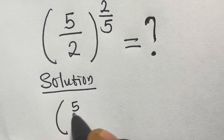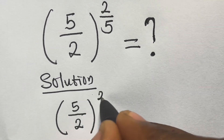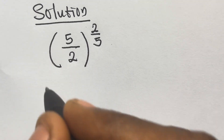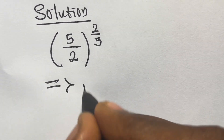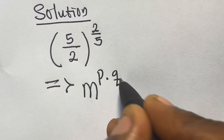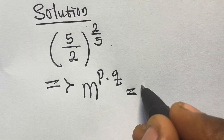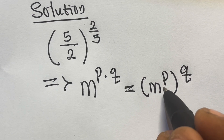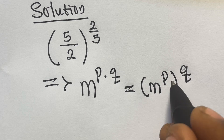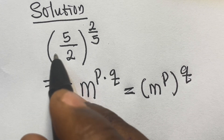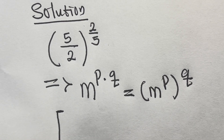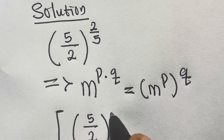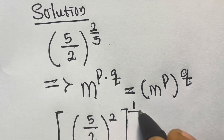We have 5 divided by 2 raised to the power 2 divided by 5. Let's recall that if you have m raised to the power p times q, this is equal to m raised to the power p, raised to the power q. This is the product power law — when a number raised to a certain power is again raised to another power, the powers are multiplied. So now we have this become 5 divided by 2, raised to the power 2, then raised to the power 1 divided by 5.